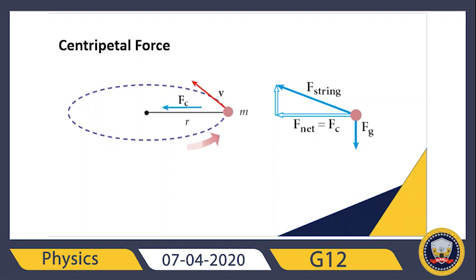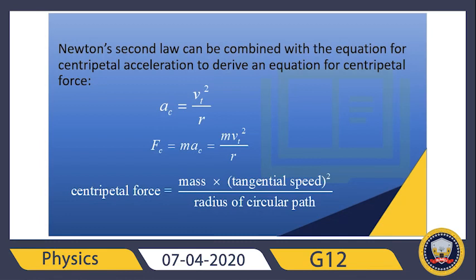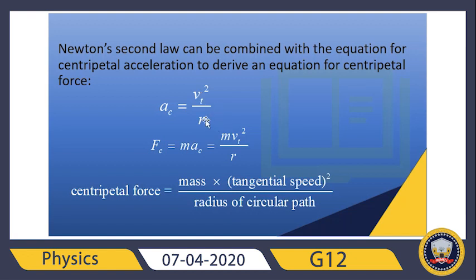Examples of centripetal force include friction force and gravitational force — it depends on the situation. For the formula, from Newton's second law: F = ma. Since centripetal acceleration equals v² divided by radius, the centripetal force equals mass times v² over radius. The unit for velocity is meters per second, for radius it's meters, giving acceleration in m/s² and centripetal force in Newtons.